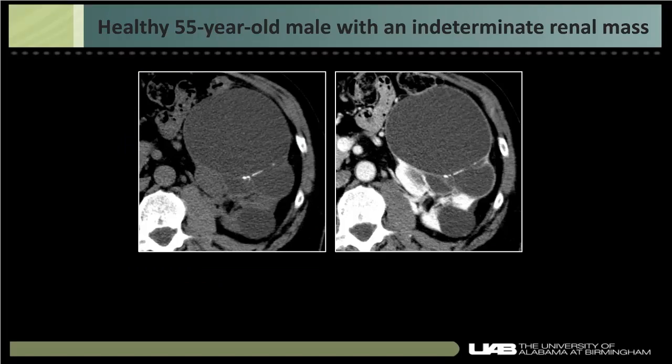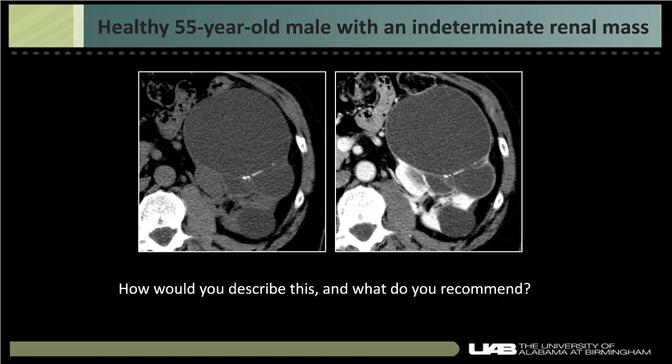Consider this case: a 55-year-old healthy male with an indeterminate renal mass. You can see a complex renal mass, multiloculated, with possible calcification and apparent enhancement. How would you describe this, and what do you recommend? We'll come back to this case later.